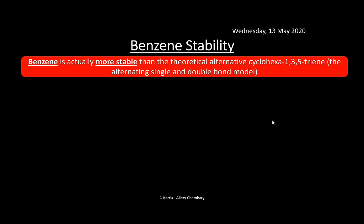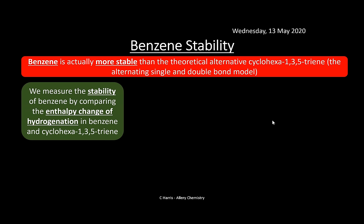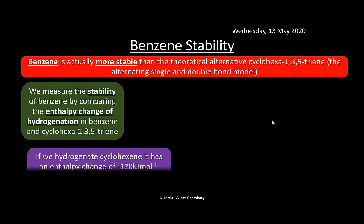Benzene is actually more stable than the theoretical alternative cyclohex-1,3,5-triene (the Kekulé structure with alternating single and double bonds). This proves the delocalized system. We can measure the stability of benzene by comparing the enthalpy change of hydrogenation in benzene versus cyclohex-1,3,5-triene.